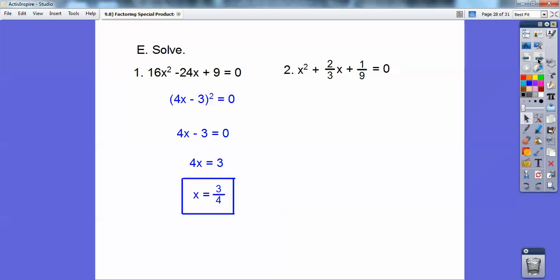Here. All right, don't let the fractions freak you out. I get kids, they get so freaked out about fractions. Squared into 1 ninth is 1 third. And if I doubled 1 third, that would be 2 thirds. So this becomes x plus 1 third quantity squared.